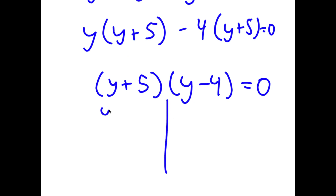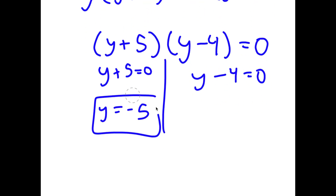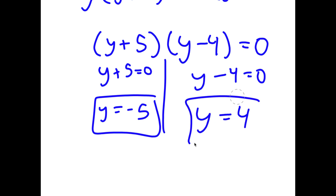So now this gives me two equations. I have y plus 5 equals 0, and I have y minus 4 is equal to 0. So y plus 5 gives y equals negative 5, and y minus 4 gives y equals 4.